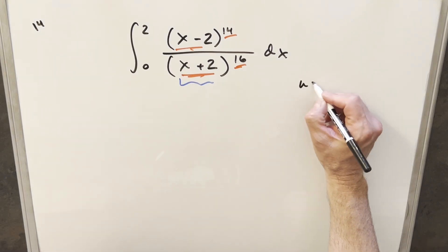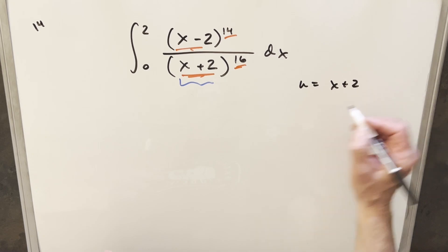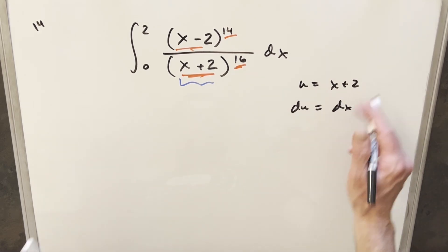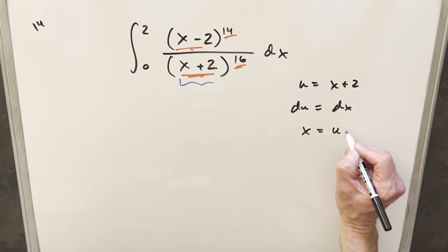So for my u, we'll just say u equals x plus 2, and then of course du is just going to be dx, so that's nice. I also can rearrange this to solve for x, so we have x equals u minus 2.